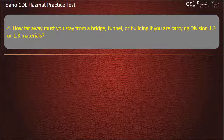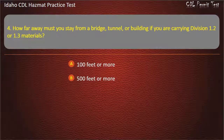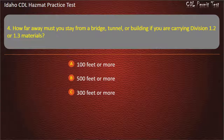Question 4. How far away must you stay from a bridge, tunnel, or building if you are carrying Division 1.2 or 1.3 materials? 100 feet or more. 500 feet or more. 300 feet or more. 200 feet or more. Answer: 300 feet or more.